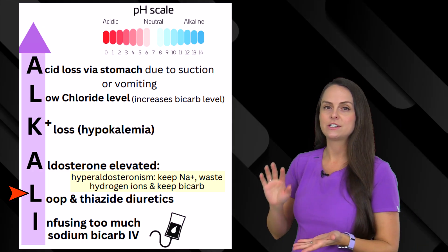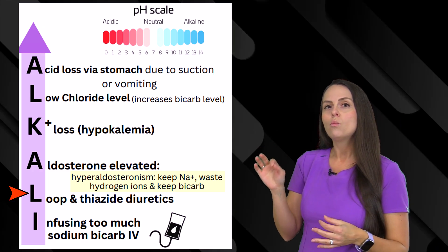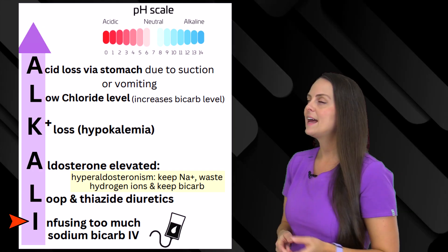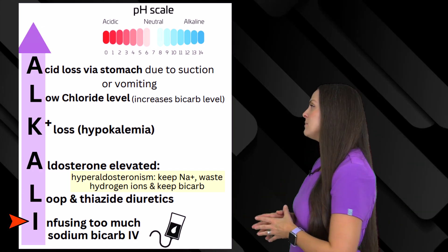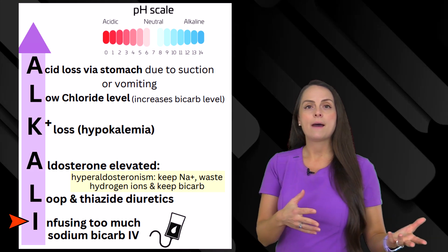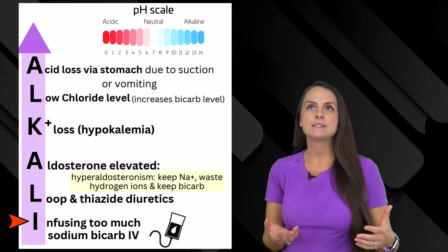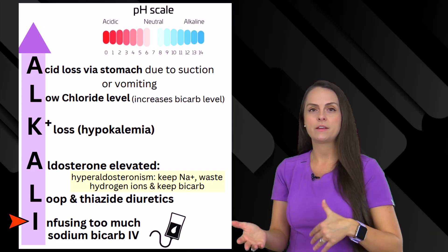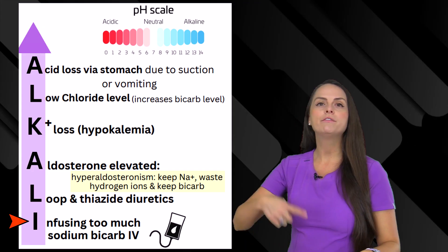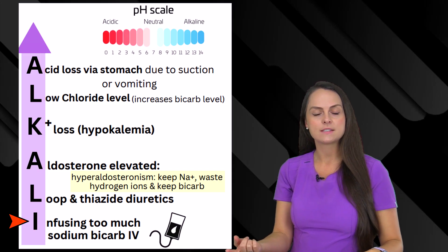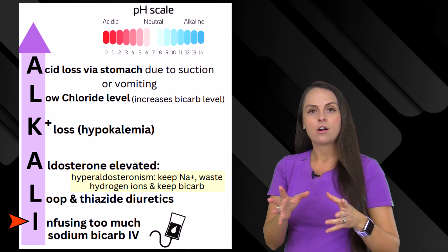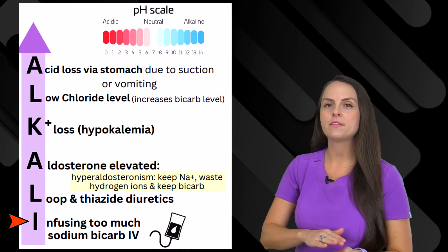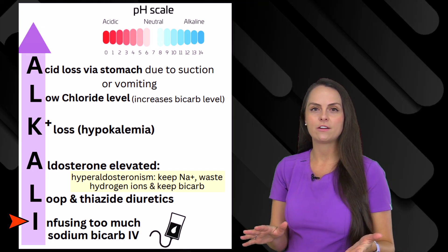Whenever we put a patient in hypokalemia, it messes with the hydrogen ion concentration, which increases the risk of developing metabolic alkalosis. And then lastly, I for infusing too much sodium bicarb IV. This could happen if the patient was in metabolic acidosis, was ordered sodium bicarbonate, and received too much — so we flip them over into alkalosis. Because bicarb in that sodium bicarb fluid acts as a base, and giving too much base will neutralize too many hydrogen ions and send them into alkalosis.